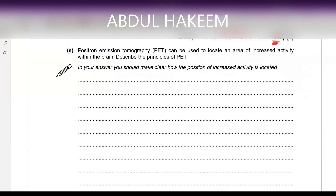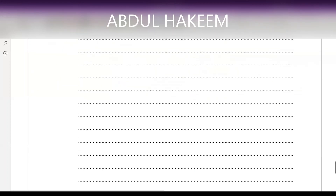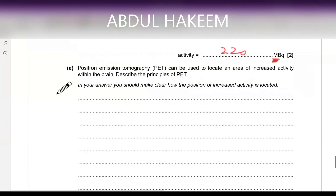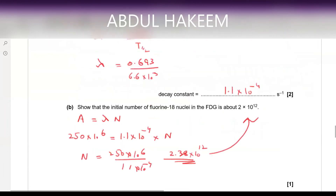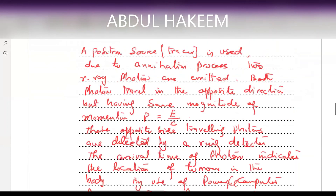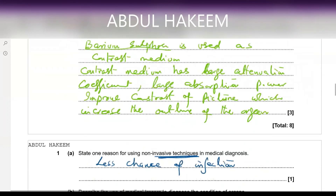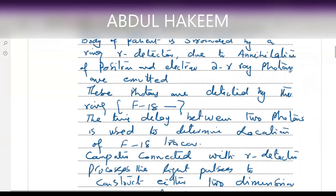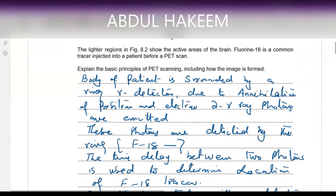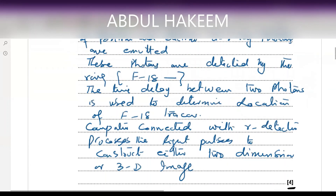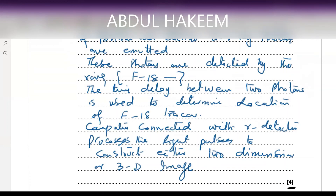Positron emission tomography can be used to locate areas of increased activity within the brain. Describe the principle of PET — this is a four-mark question, already covered. You can get help from the previous answers. These are the few questions about positron emission tomography. Thank you.